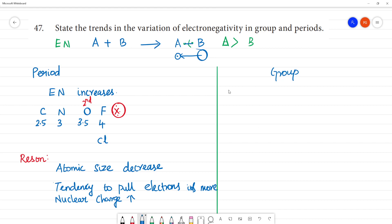So when it is down the group, this is along the period, left to right along the period. Here we go top to bottom. Electronegativity value decreases.